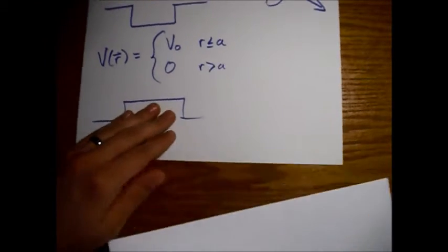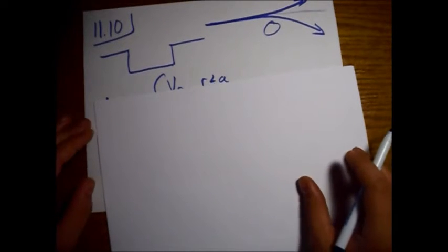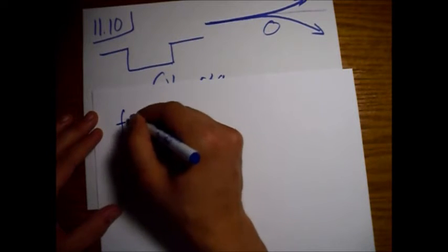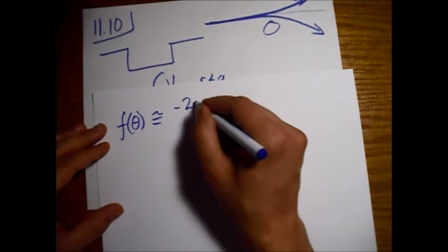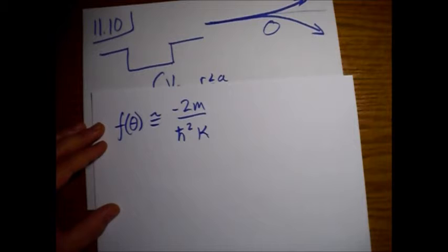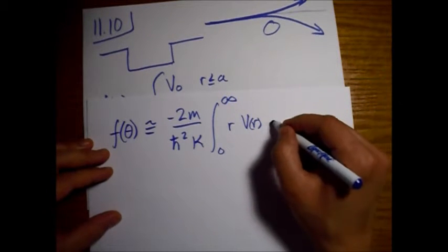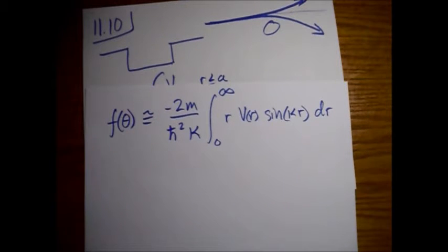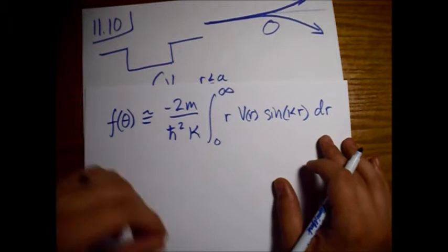We're going to use the equation Griffiths gives us for the Born approximation with spherical symmetry — that's equation 11.88. Our scattering amplitude is approximately equal to minus 2m over h-bar squared times 1 over kappa, integrated from zero to infinity of r times V(r) times sine of kappa r dr.